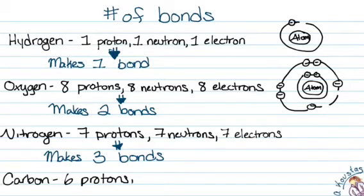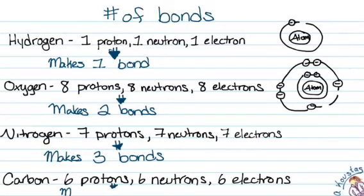Carbon has six protons, six neutrons, and six electrons. Two in the innermost shell, and the remaining four on the outer valence shell. So it's going to want to make four bonds in order to fill up the four empty spaces in its valence shell.